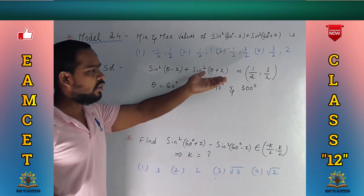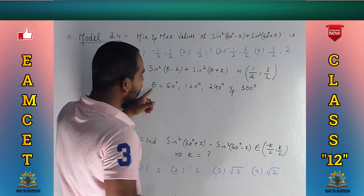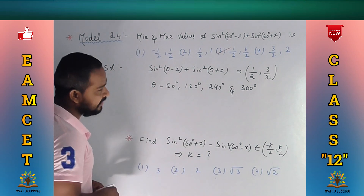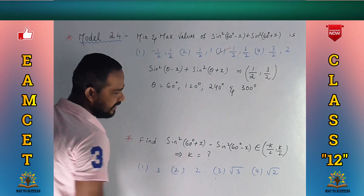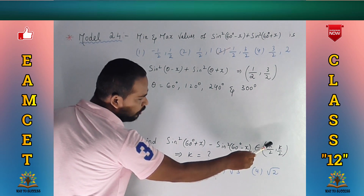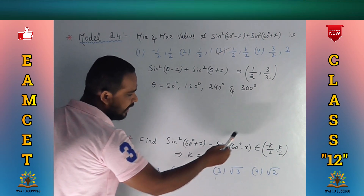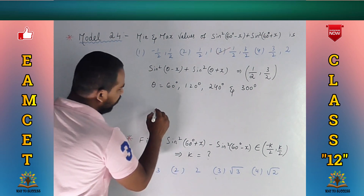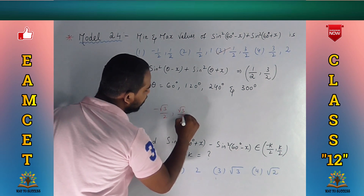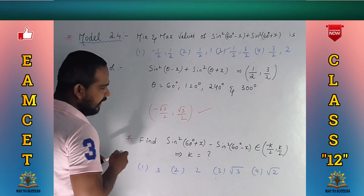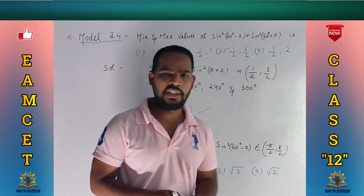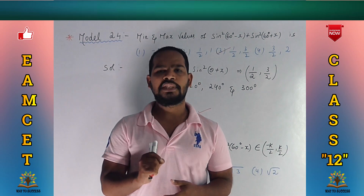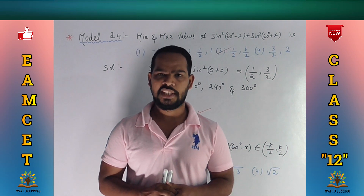For the extra practice question, note here we have plus and here minus. The expression belongs to [-√3/2, √3/2] and then you can get the answer. Comment in the comment box. This is our today's topic. Next chapter's videos start soon — please give me a like. Thank you so much!